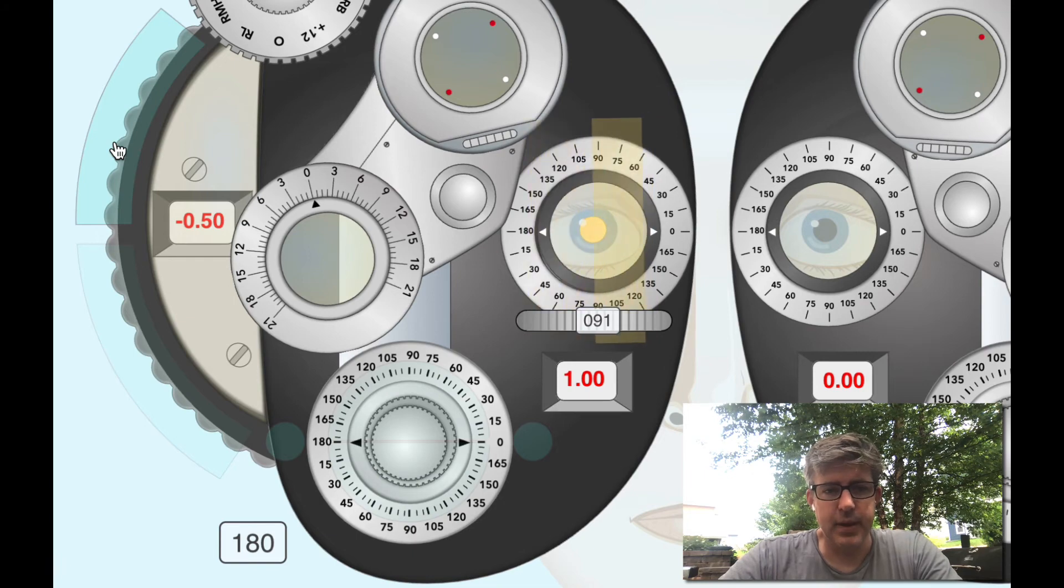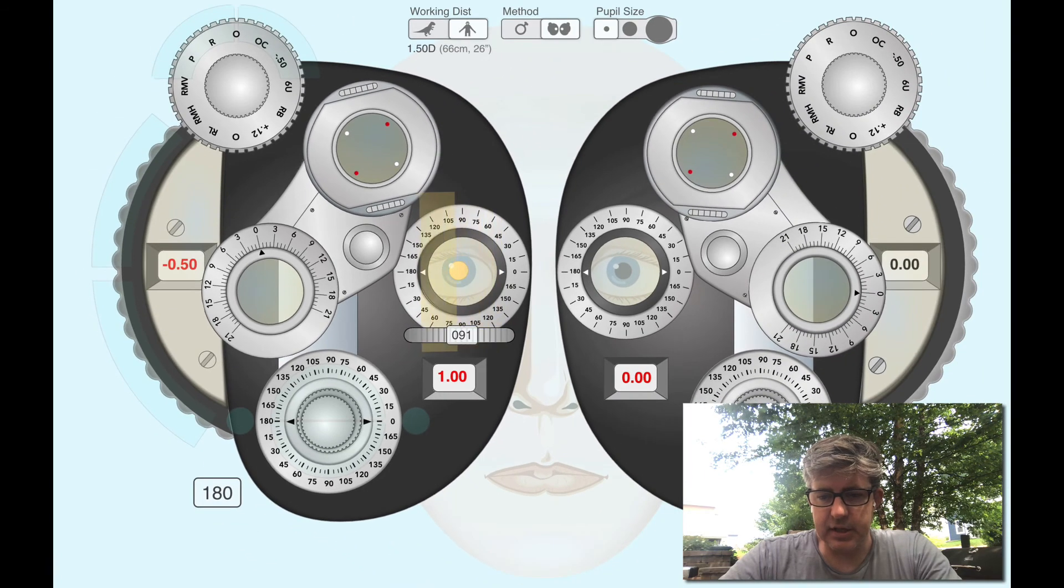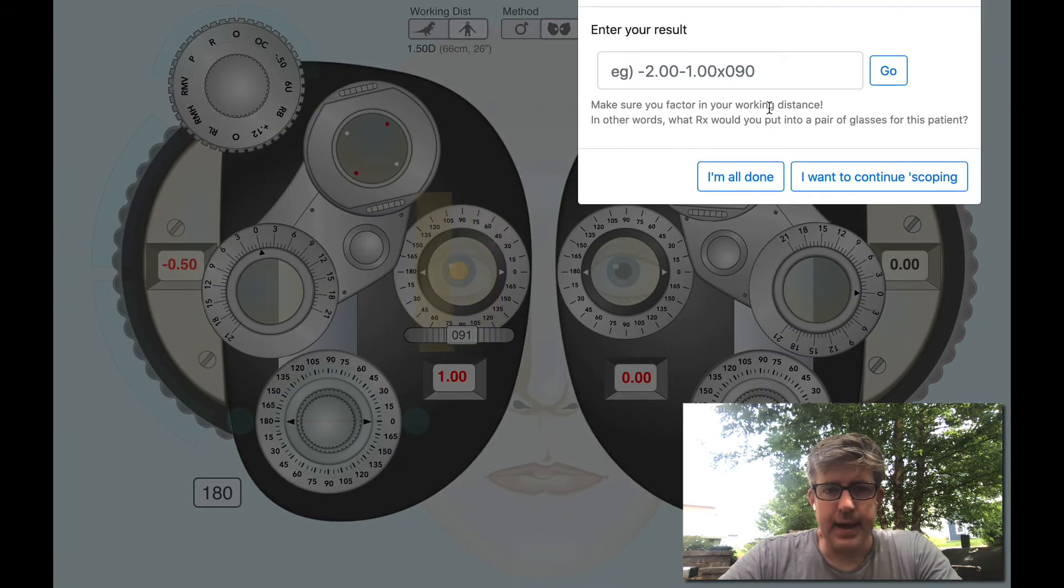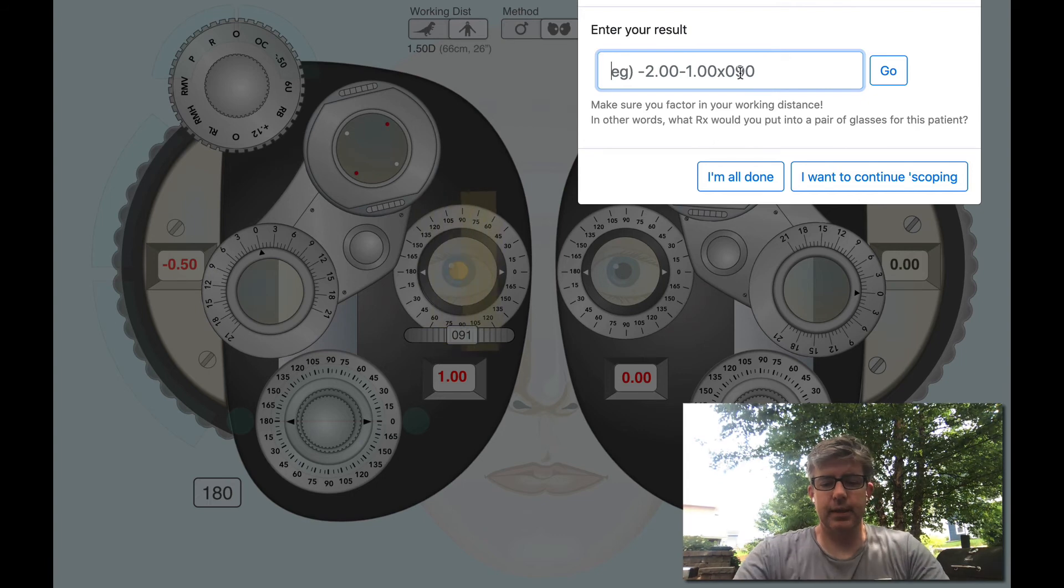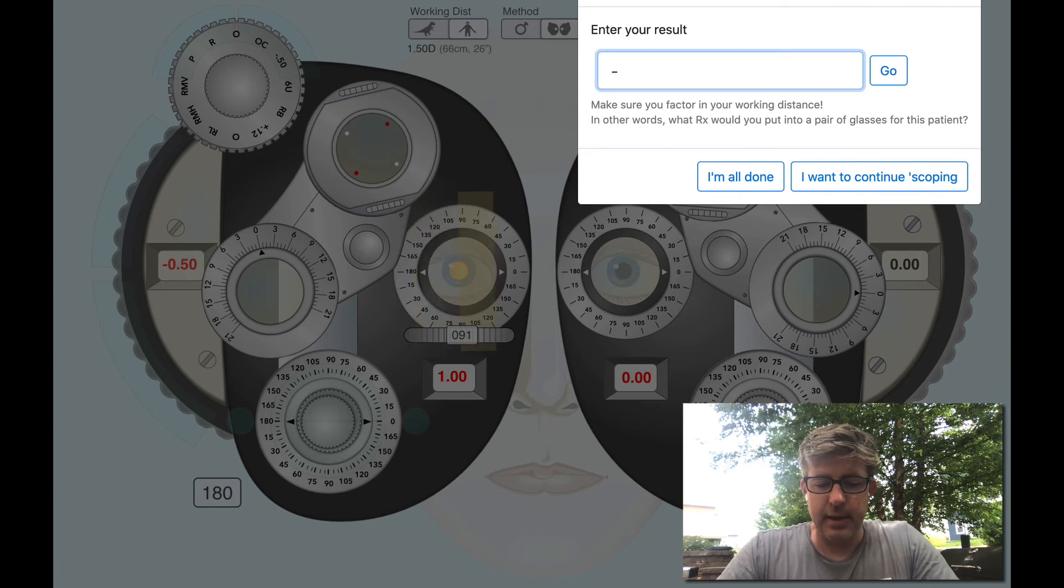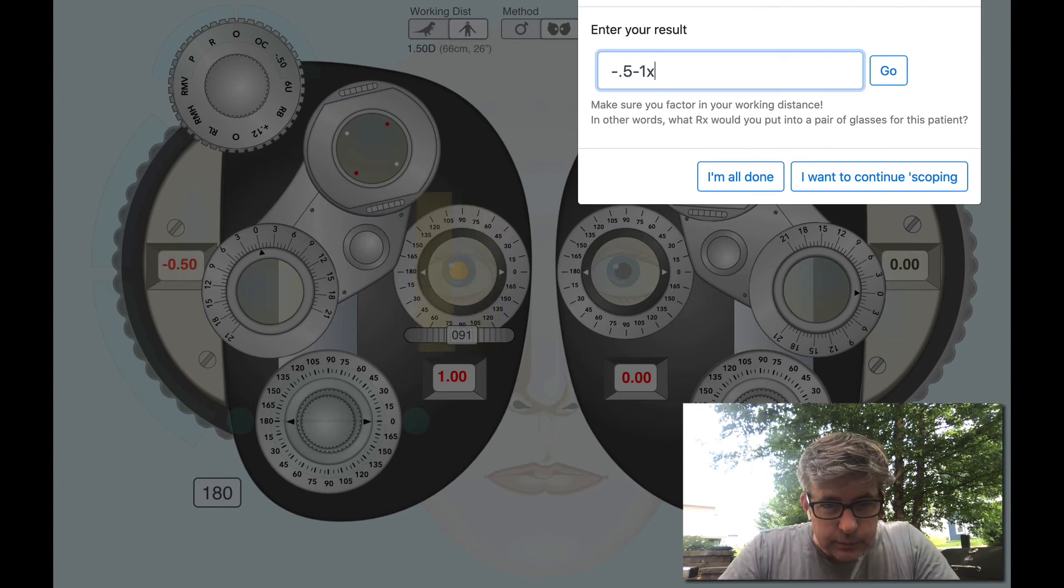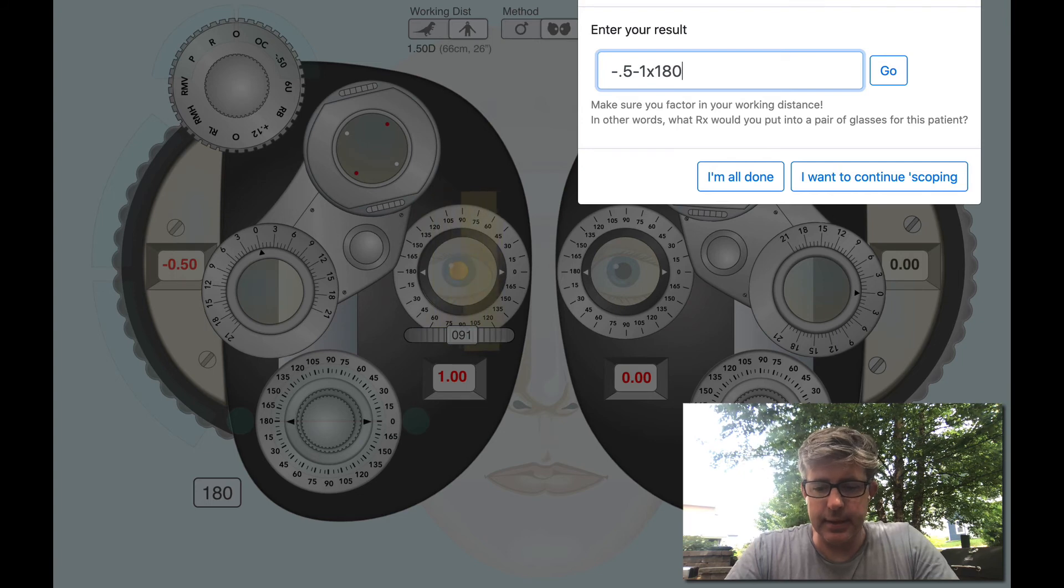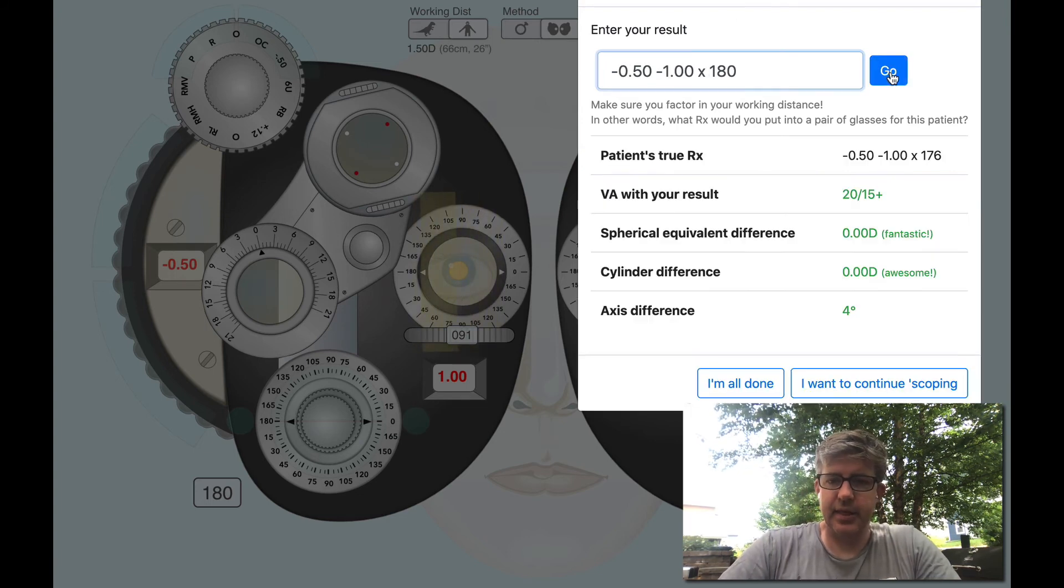Let's see, this is my result. I want to see how I did. I'm going to hit finish. I'm going to put my result in here which should be incorporating the working distance which we've already done. So I'm just going to read right off my instrument. I have a minus 0.5, I have a minus one cylinder, and the instrument axis was 180.